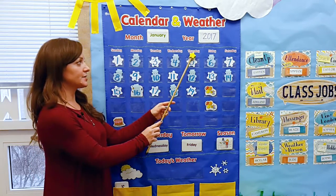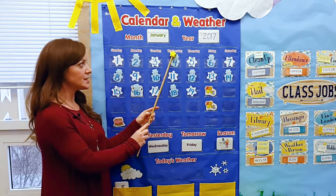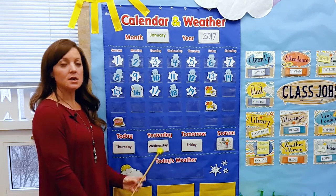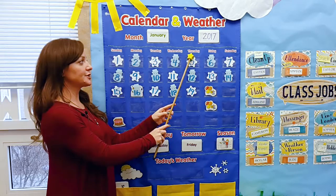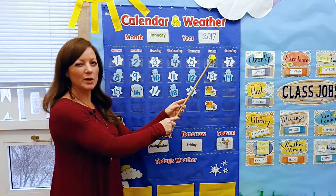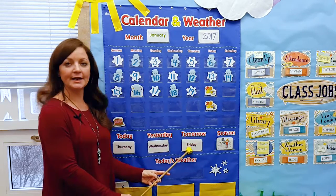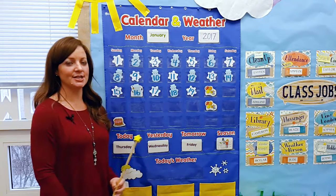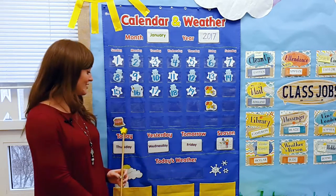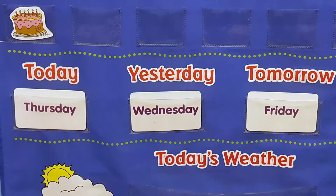Now, if today is Thursday and I put my star backwards, yesterday was Wednesday. If today is Thursday and I move forward to the future, tomorrow will be Friday. I think it's very important for the kids to understand that language and to repeat it after me, so they know that today is a day, yesterday was, and tomorrow will be that day.